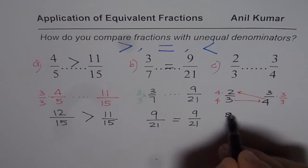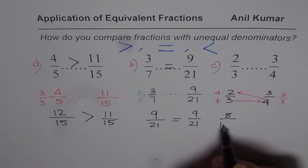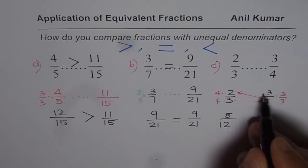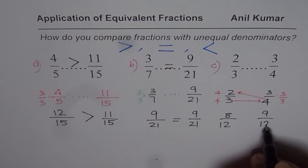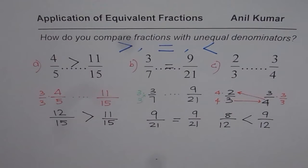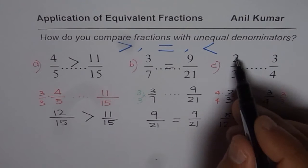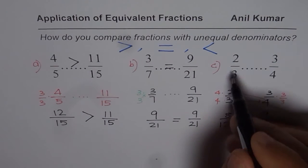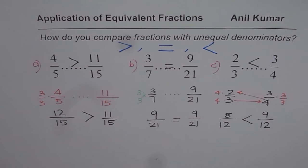So: 4 times 2 is 8, and 4 times 3 is 12. Then 3 times 3 is 9, and 3 times 4 is 12. Clearly 9 is greater than 8, and therefore we can write 3 over 4 is greater than 2 over 3, or equivalently 2 over 3 is less than 3 over 4.